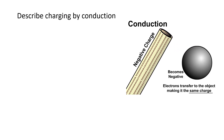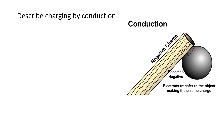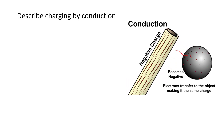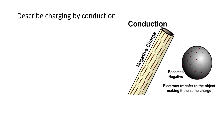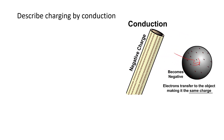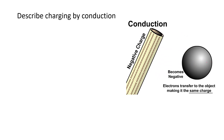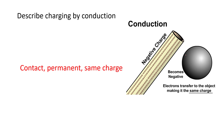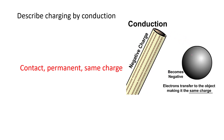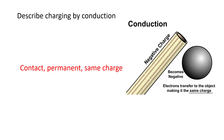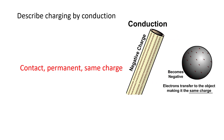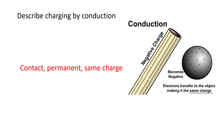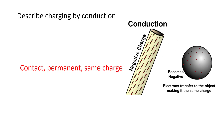Charging by conduction: a neutral object comes into actual contact with a charged object that has lots of extra electrons. Those electrons flow onto the neutral object. This is permanent because there's actual contact and an actual transfer of electrons, and the same charge is given off — a negative object makes something else negative. A positive object would make something else positive by sucking off electrons, and the other object ends up with the same charge.